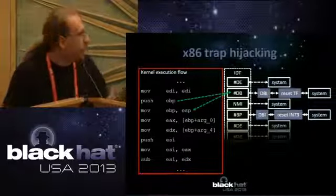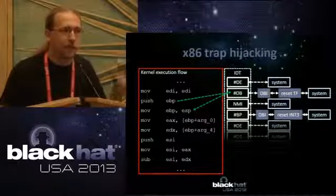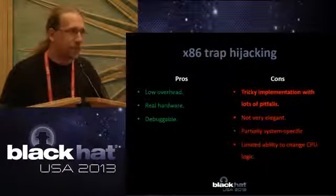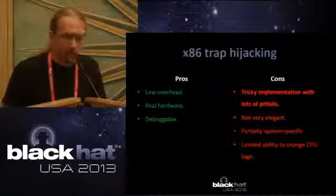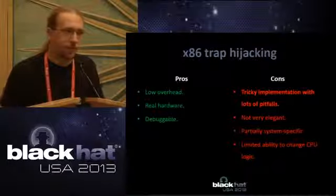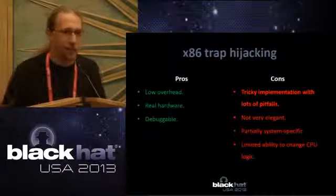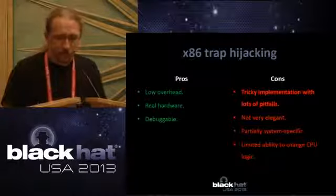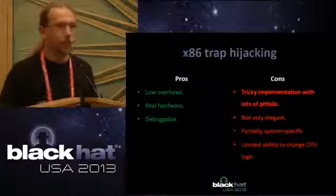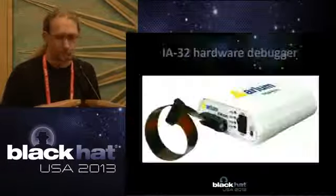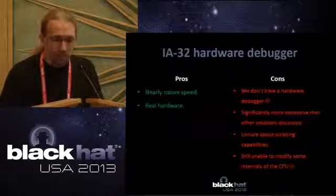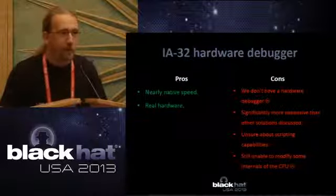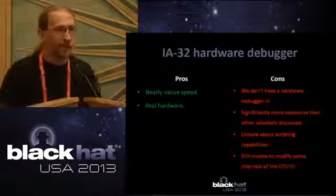Another approach is x86 trap hijacking — this is the method that SoftICE uses. It has pretty low overhead, allows access to real hardware, and is pretty debuggable. However, it's tricky to implement and might be a little system-specific. It's also limited to what the CPU allows — what traps and exceptions it issues. And then there's the hardware debugger approach; the biggest problem is that we don't have one — they cost some money, whereas all the other approaches don't. They probably have close to native speed and access to real hardware.